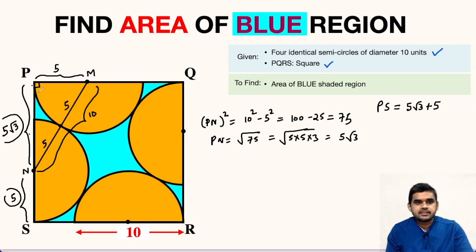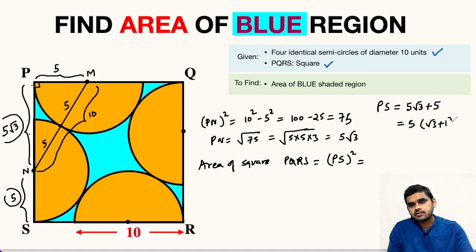Now after finding the side length of this square, we can find the area of square PQRS. So it will be equal to, we can write PS whole square, or we can take 5 here common. So this will be root 3 plus 1. So here it will be 5 times root 3 plus 1 whole square. Let us simplify this. So 5 square will be 25, and this will be root 3 plus 1 whole square.